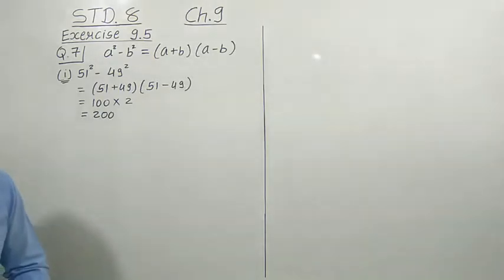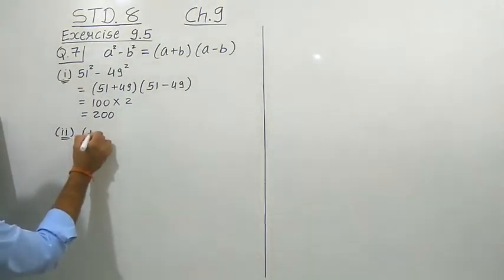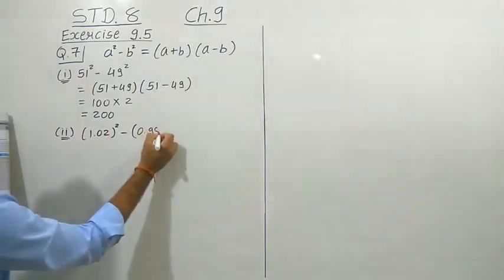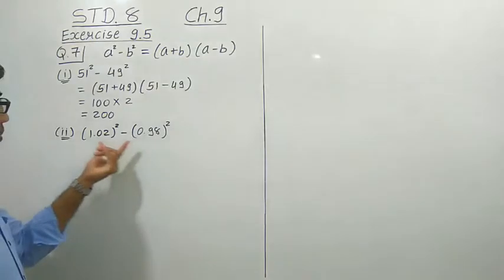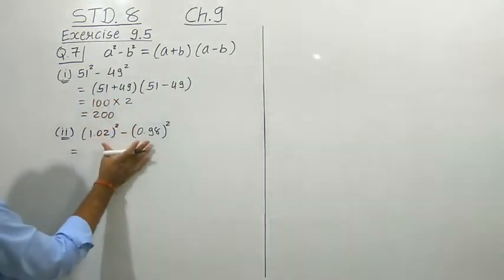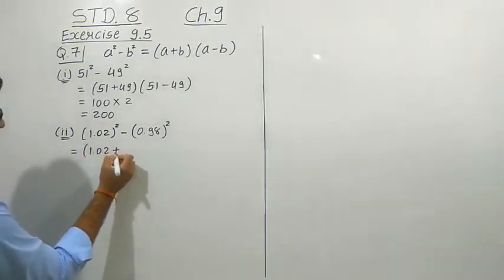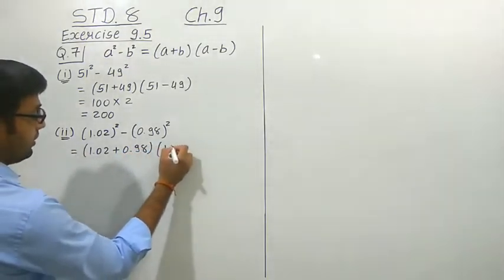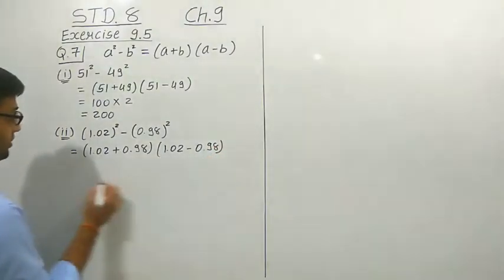Let us see one more question, the second subquestion: 1.02 squared minus 0.98 squared. If we apply the squares and then subtract, it will be a lengthy process. Let us use this identity. We write in one bracket the addition of both numbers and in another bracket the subtraction: 1.02 plus 0.98 in the first bracket, and 1.02 minus 0.98 in the second bracket.